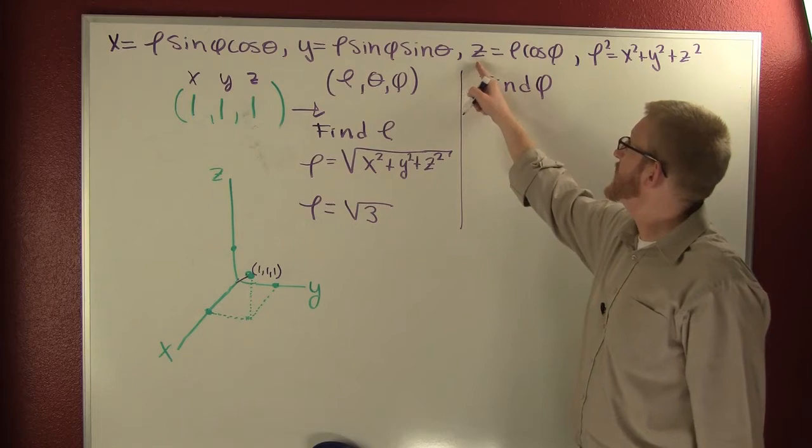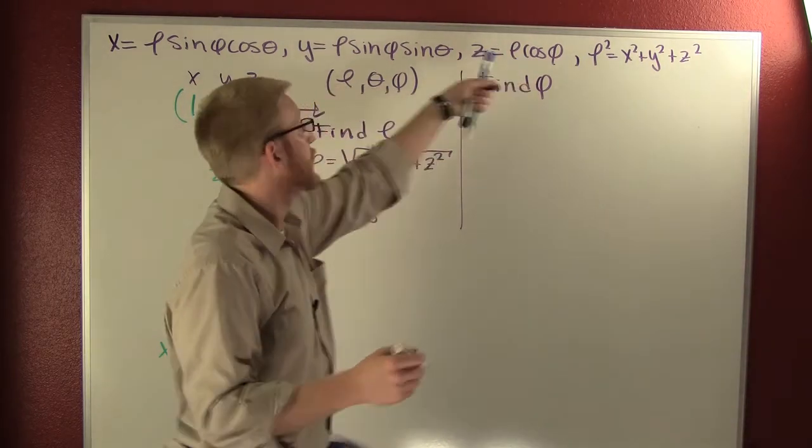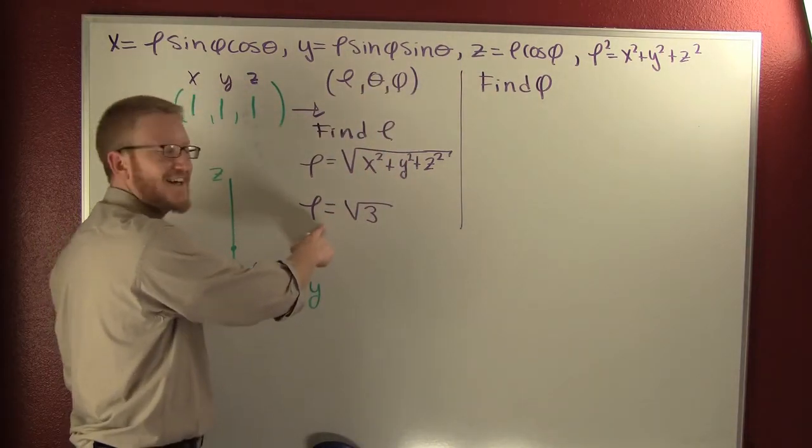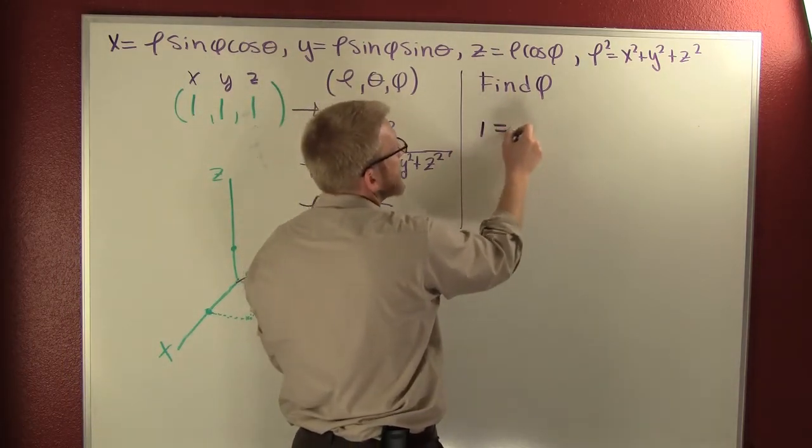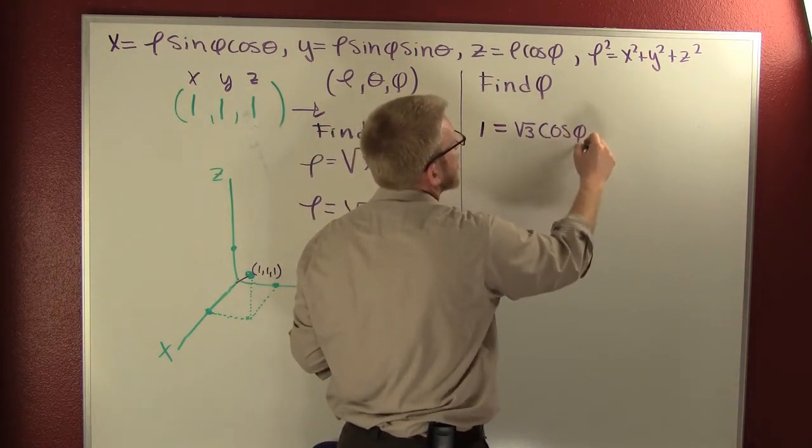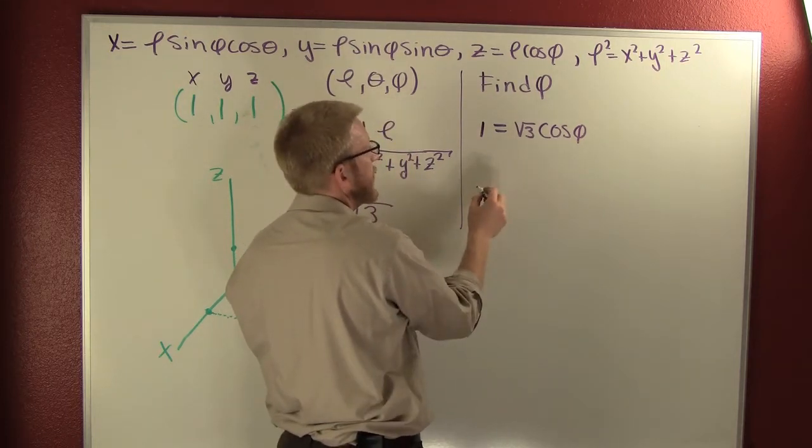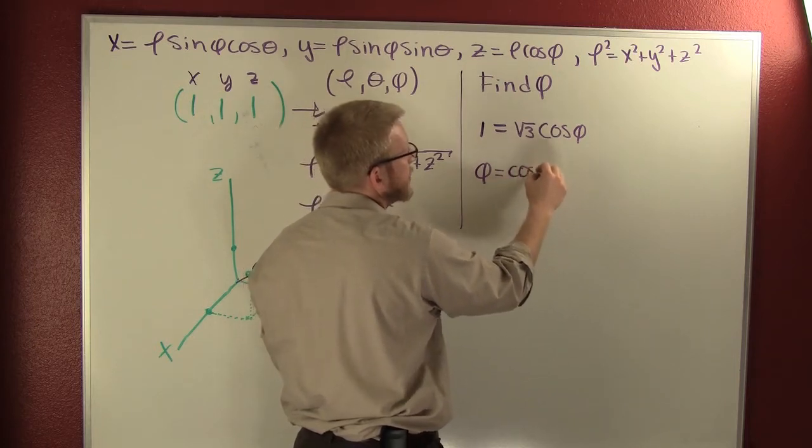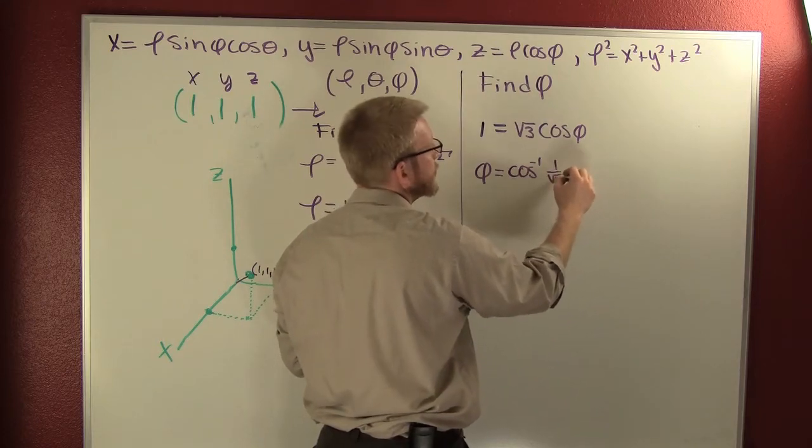Let's find phi by using z and rho. We've already got those, guys. So we're going to use z and rho. Z from my original point, rho from my calculation. So then z is one. That's root three cosine phi.